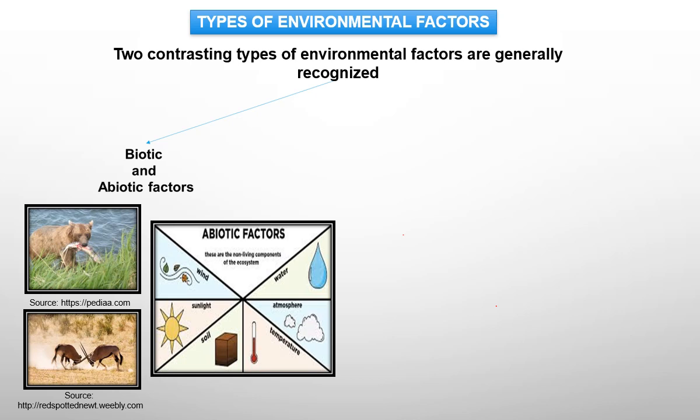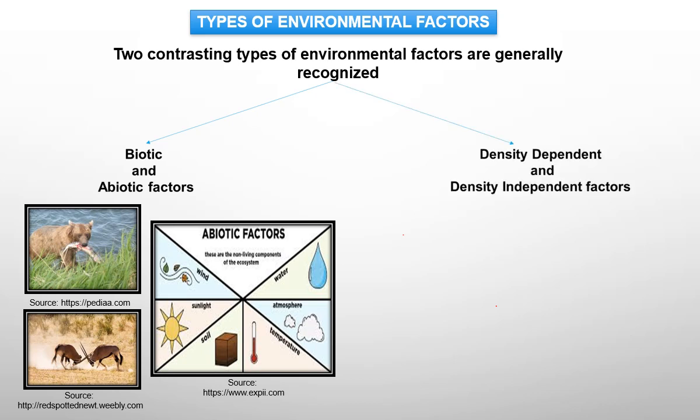Abiotic factors are extremely broad: sunlight, air, soil, rock, minerals, water, and temperature are all abiotic factors. Sunlight provides energy that plants utilize to grow, which ultimately supports the whole biotic community. The photographs shown include examples of predation as a biotic factor, and different abiotic factors like wind, sunlight, soil, temperature, atmosphere, and water.